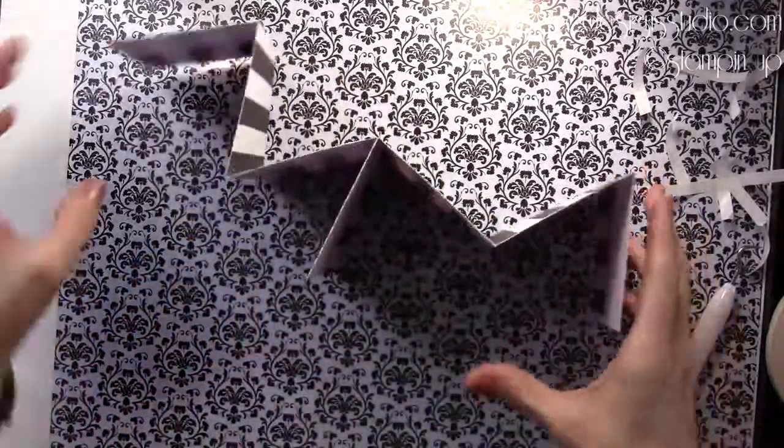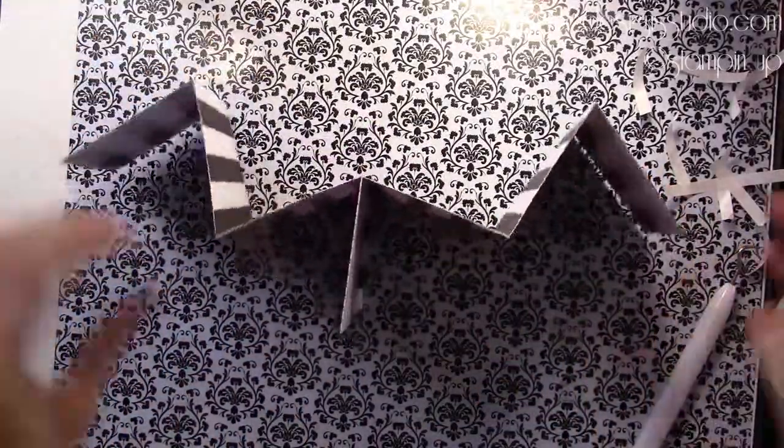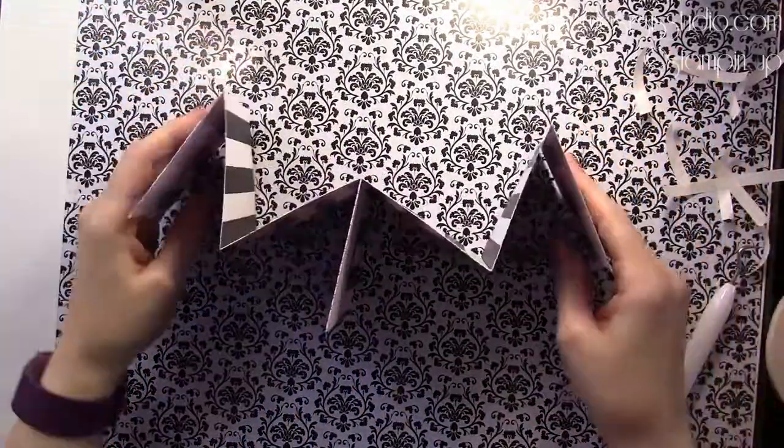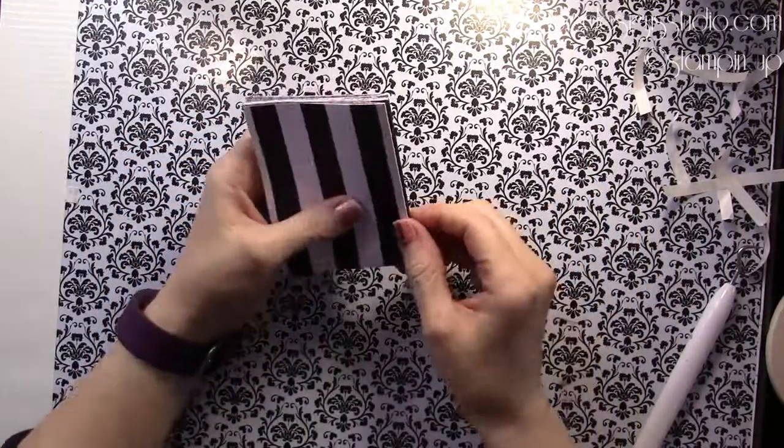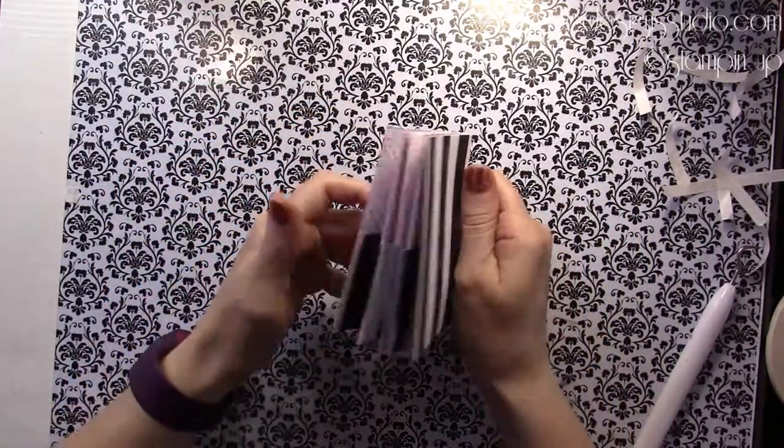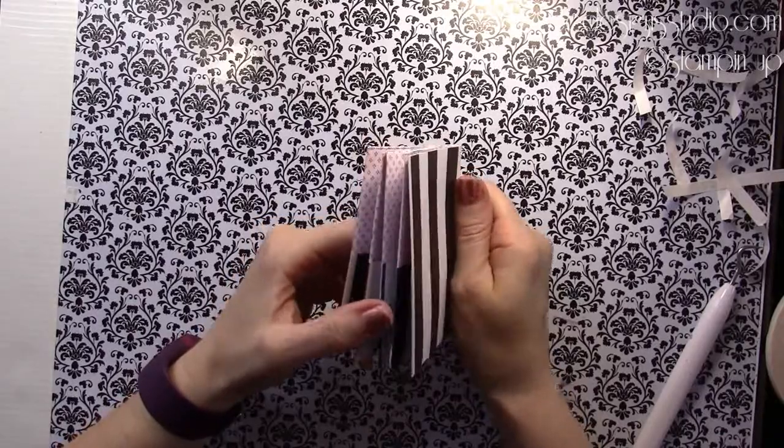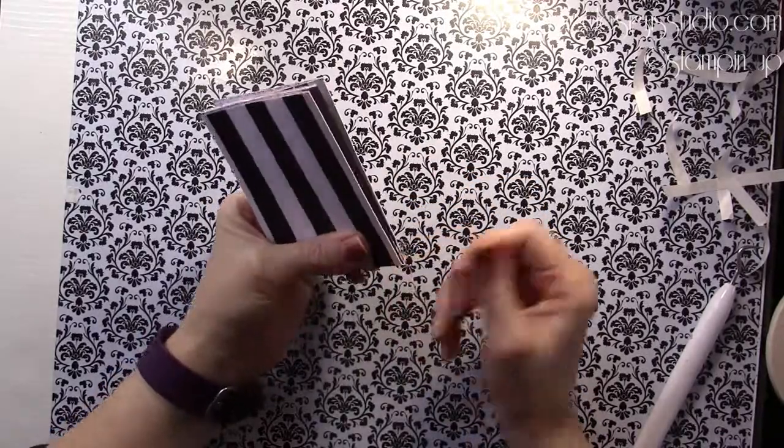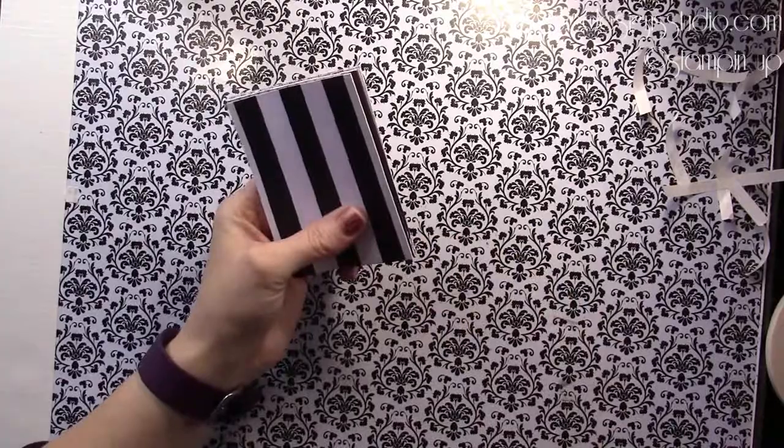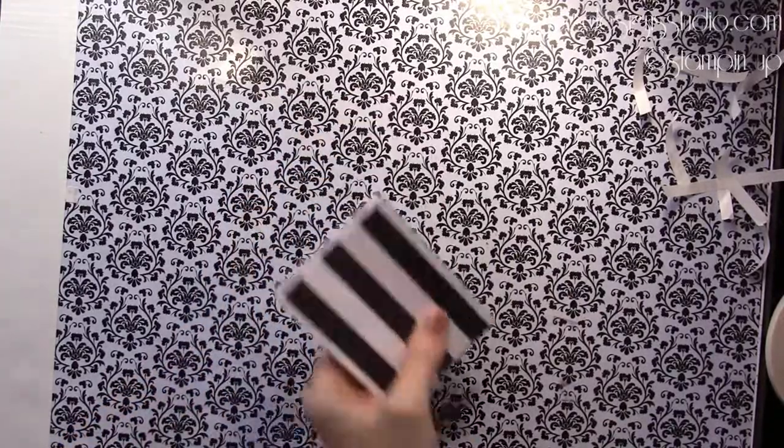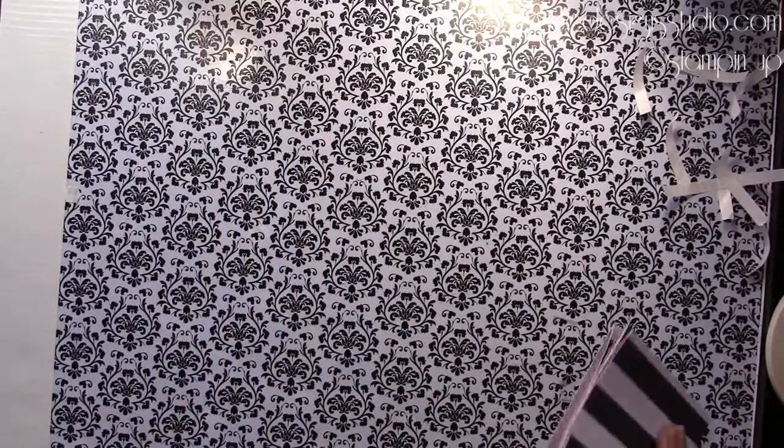So our book's holding together a little bit better now, but it's still kind of open and flapping in the wind. So there's a couple of different solutions for your book binding here at the end. And you can use just washi tape. And that's what I'm going to use today. I'm going to use some of the Pop of Pink washi.